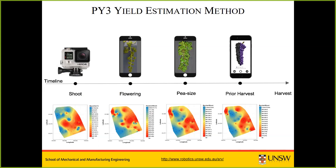Looking at the results, the distribution of flower and berry counts per shoot remains relatively constant between the flowering and pea-size stages and doesn't change much prior to harvest, with some exceptions where berry diameter and berry weight influence the final yield. We found we are able to determine fruit set ratios for each bunch simply by taking a photo before flowering and after fruit set — an essential tool for this yield prediction.